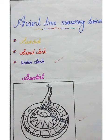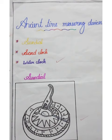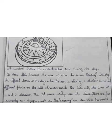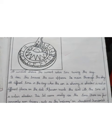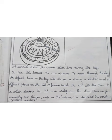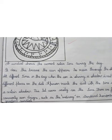Here three devices we have taken: sundial, sand clock, and water clock. The sundial picture is like this. A sundial shows the current solar time during the day. It does this because the sun appears to move through the sky at different times in the day. When the sun is shining, a shadow is cast in a different place on the dial. A person marked the dial with the time at a certain shadow. This lets users easily see the time.